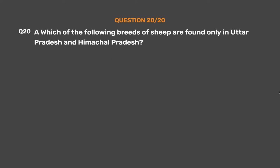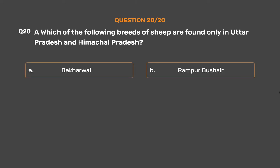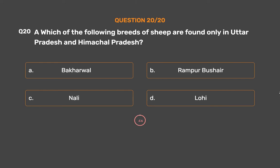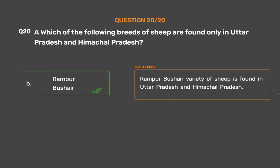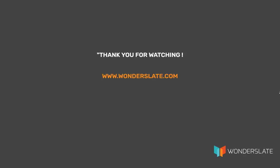Question No. 20. Which of the following breeds of sheep are found only in Uttar Pradesh and Himachal Pradesh? Option A: Bakharwal, Option B: Rampur Bhushar, Option C: Nali, Option D: Lohi. The correct answer is Option B: Rampur Bhushar. Rampur Bhushar variety of sheep is found in Uttar Pradesh and Himachal Pradesh.